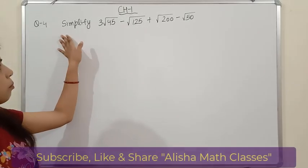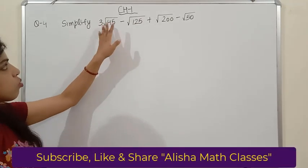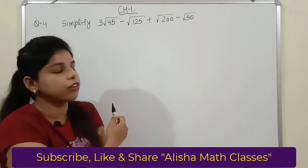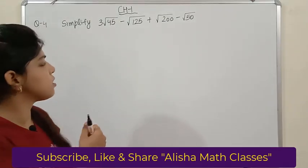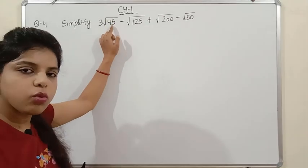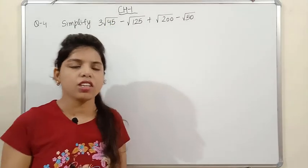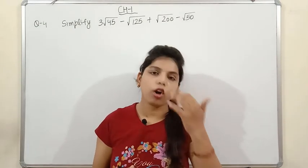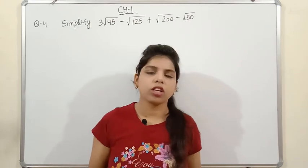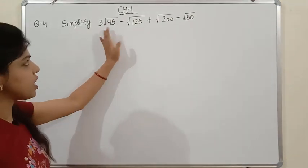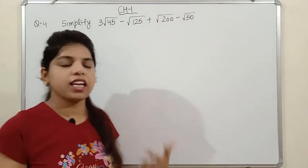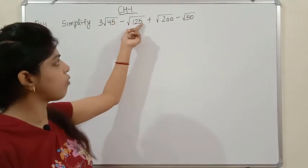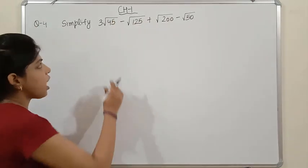Question 4: simplify 3√45 - √125 + √200 - √50. The numbers inside the square roots are not perfect squares, so don't try to directly take the square root. Instead, find the prime factors. For 45: 45 = 3×3×5. For 125: 125 = 5×5×5. For 200: 200 = 2×2×2×5×5. For 50: 50 = 2×5×5.